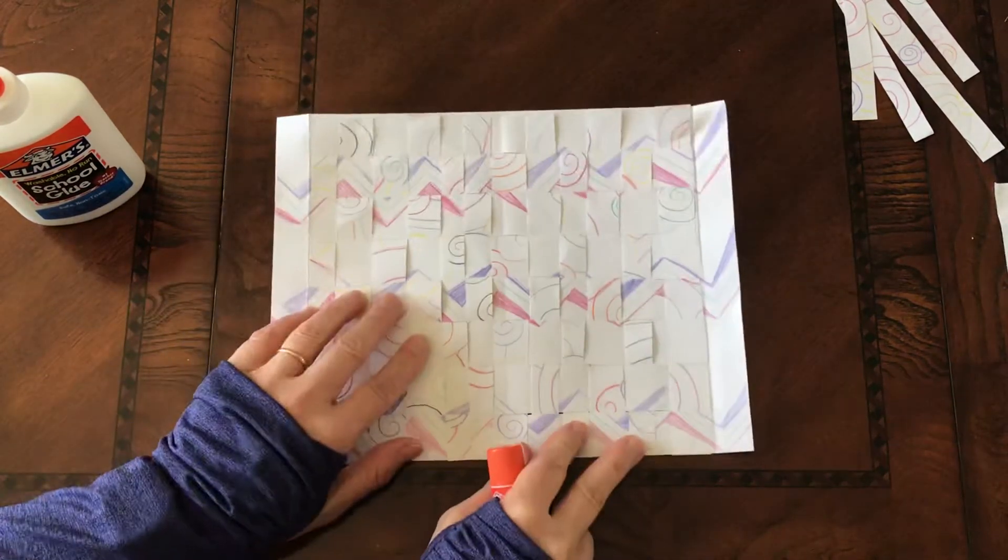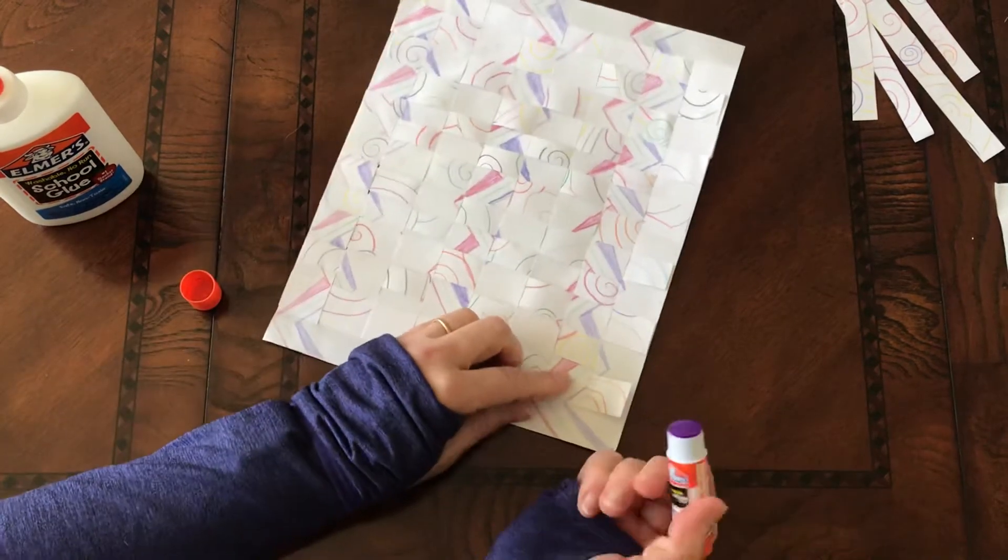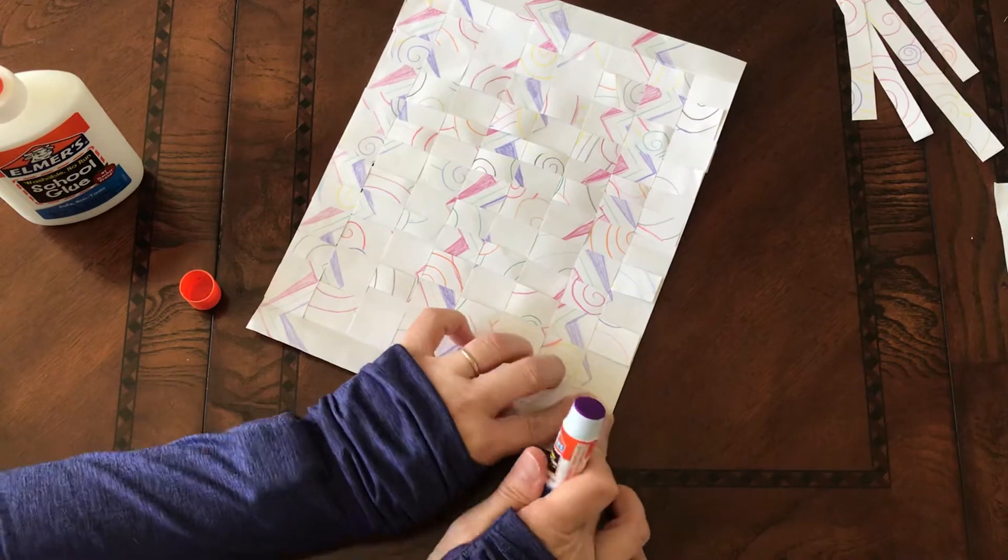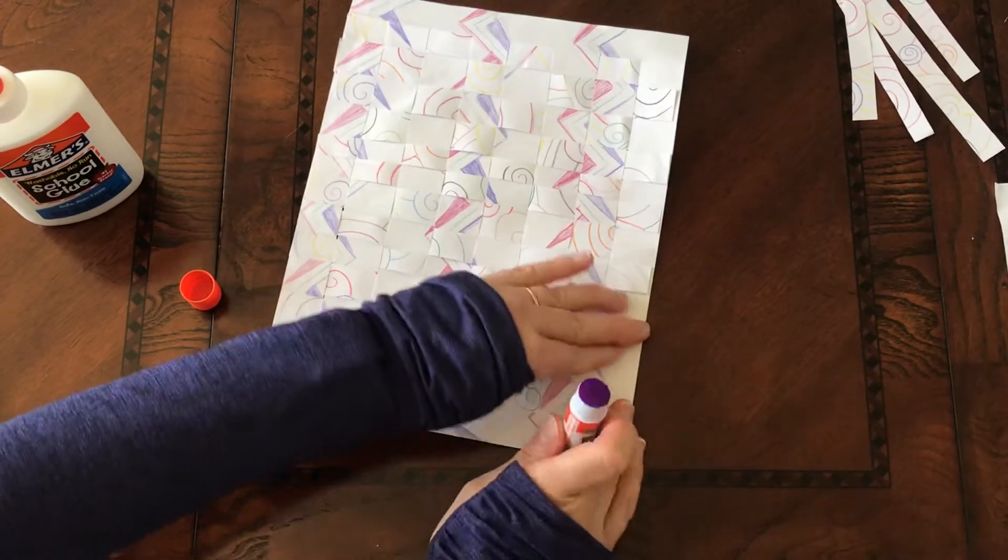You could use it as a little placemat or hang it on the wall. If you have a glue stick, use a glue stick. I'm going to put a little bit of glue and then press down. A little bit of glue, press down. You just want to tack it down.